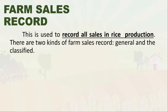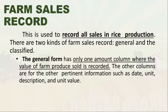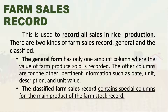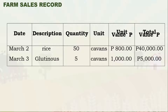Next is the farm sales record. The farm sales record is used to record all sales in price production. There are two examples: the general form that has only one amount column where the value of farm produce sold is recorded, and the classified farm sales record that contains special columns for the main product of the farm.